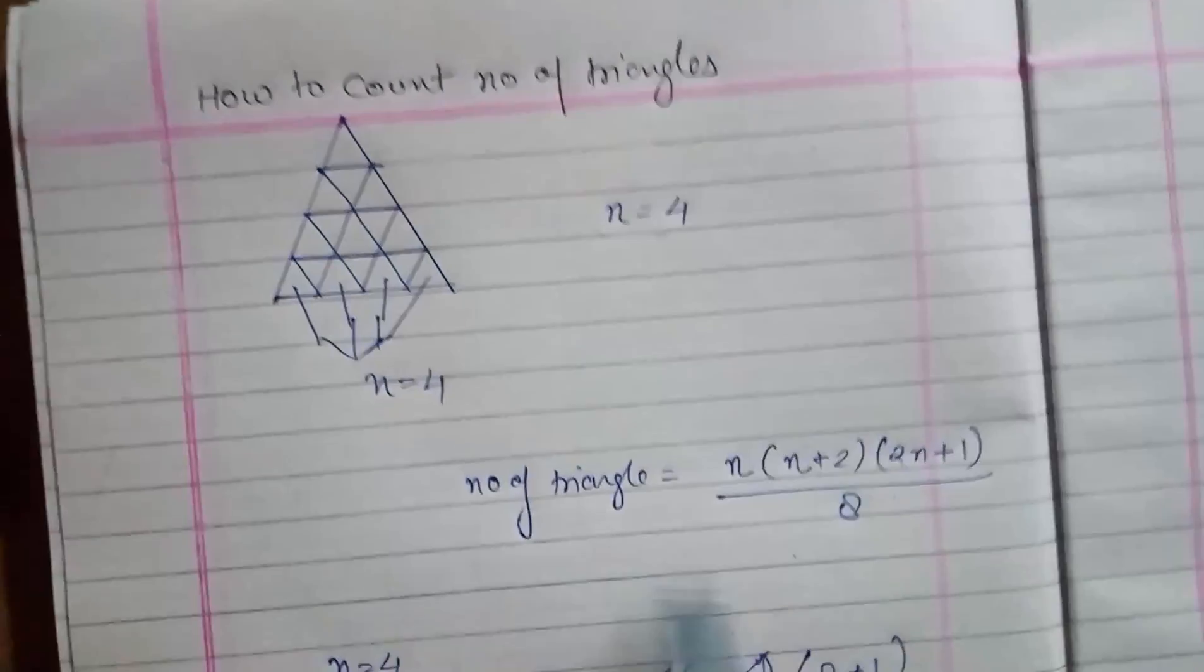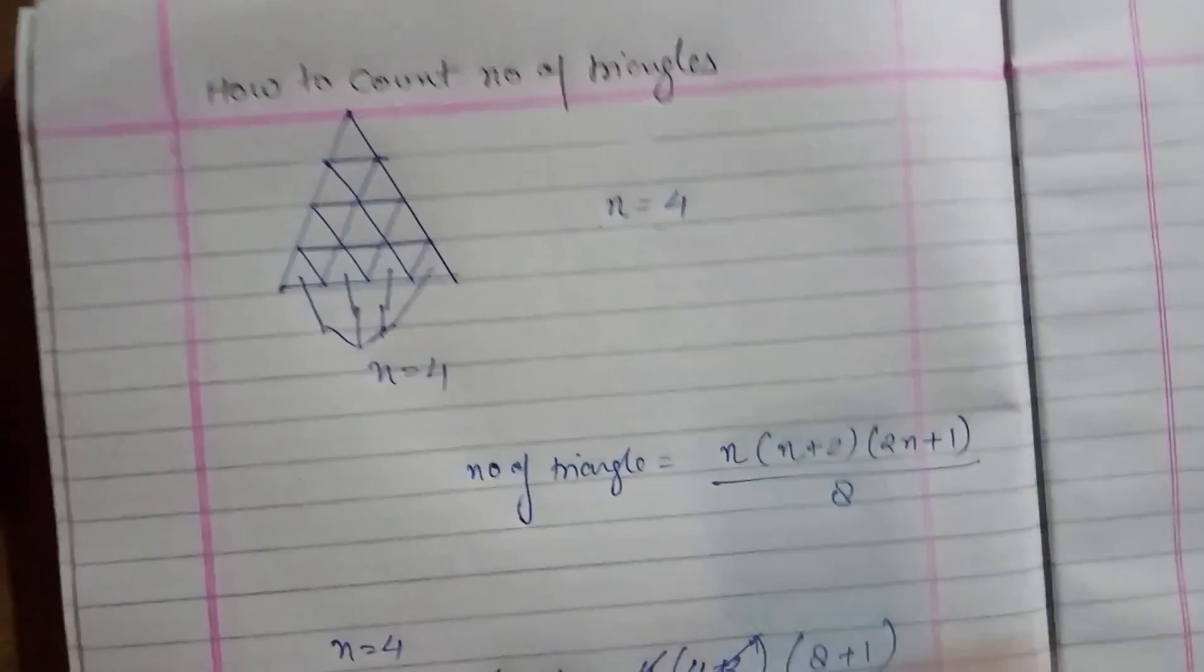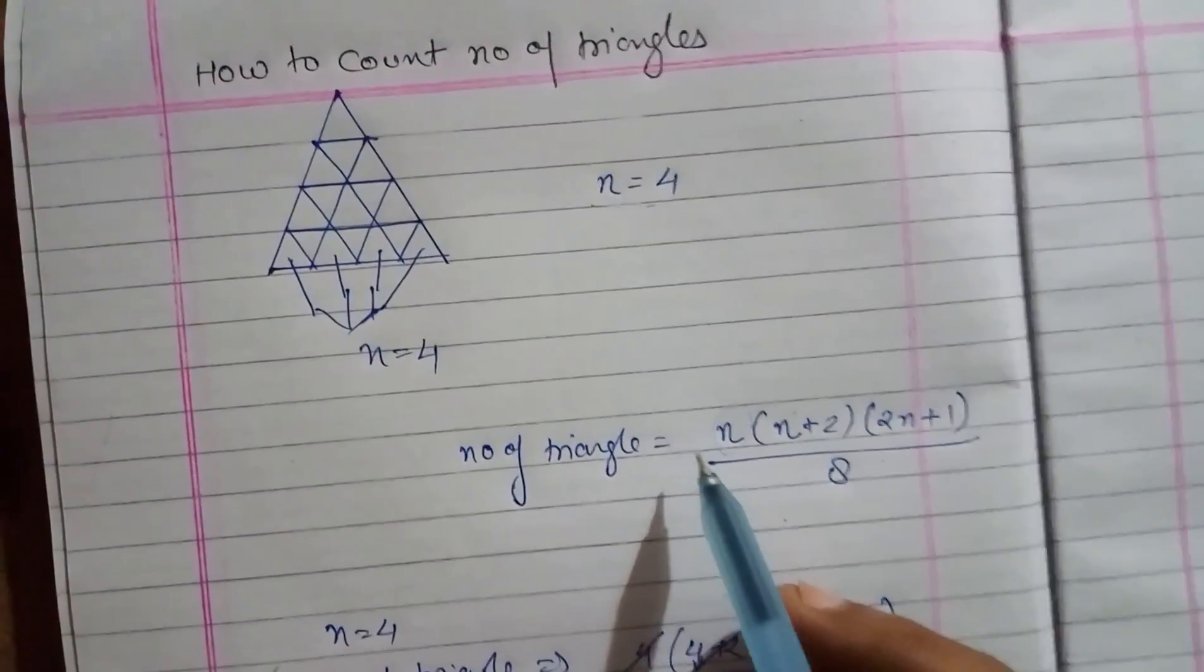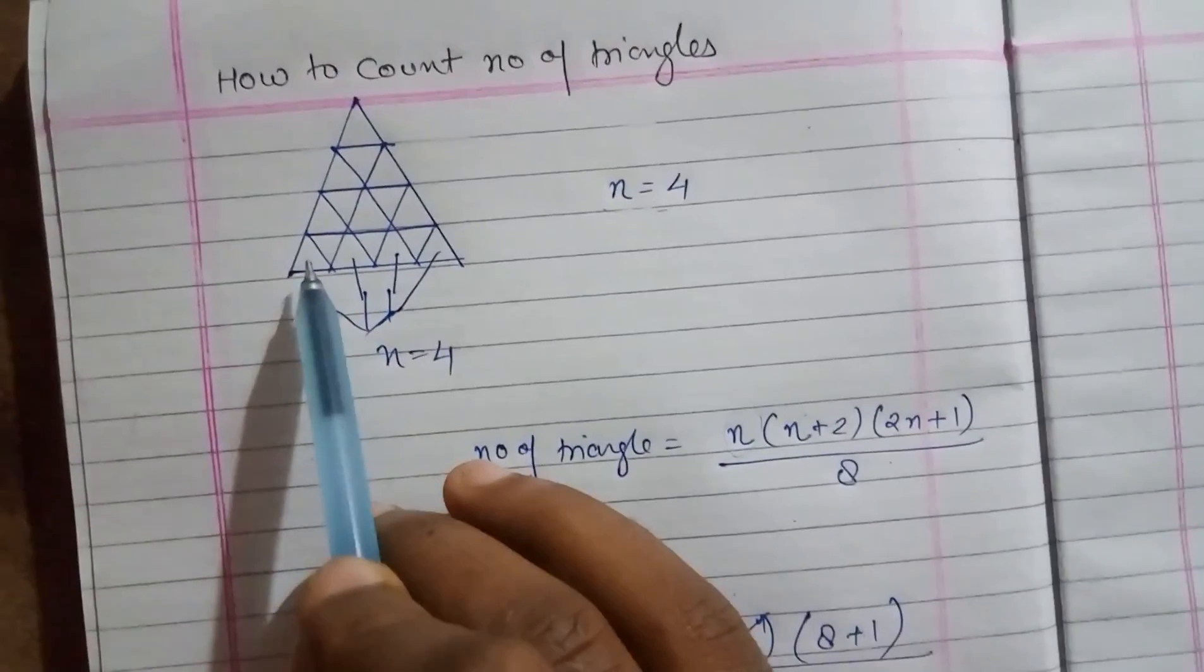First of all you have to know this is the formula: n(n+2)(2n+1)/8. First of all you have to know what is n. N is the number of base triangles.